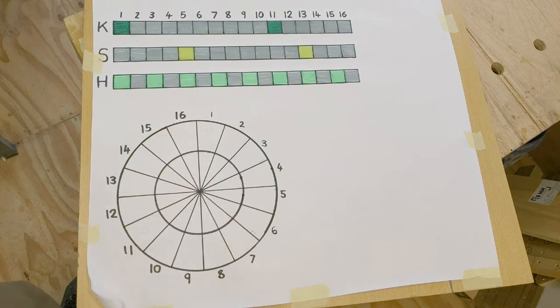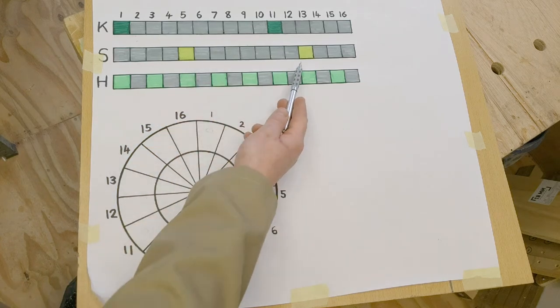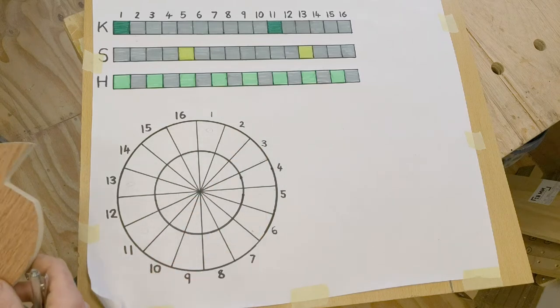The snare cam wheel hits on the 5 and the 13. Like this.